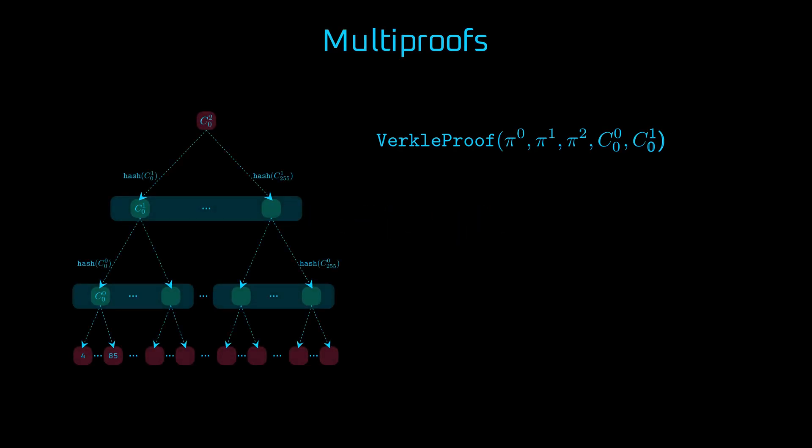For our three-level verkle tree, a verkle proof consisted of three opening proofs and two commitments. A multi-proof is a new opening proof pi generated for another commitment D, which is constructed by aggregating the commitments on a verkle tree path. How exactly? We need to take a deeper look at vector commitments.